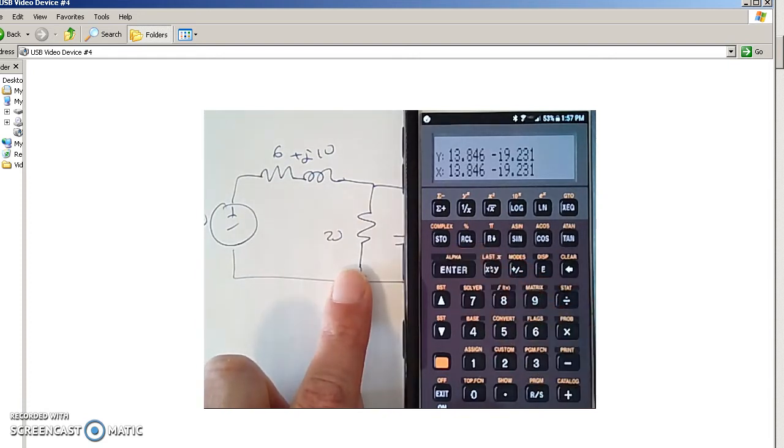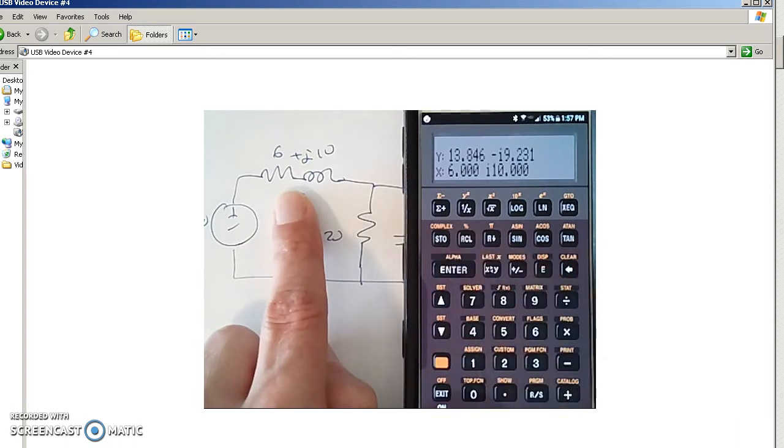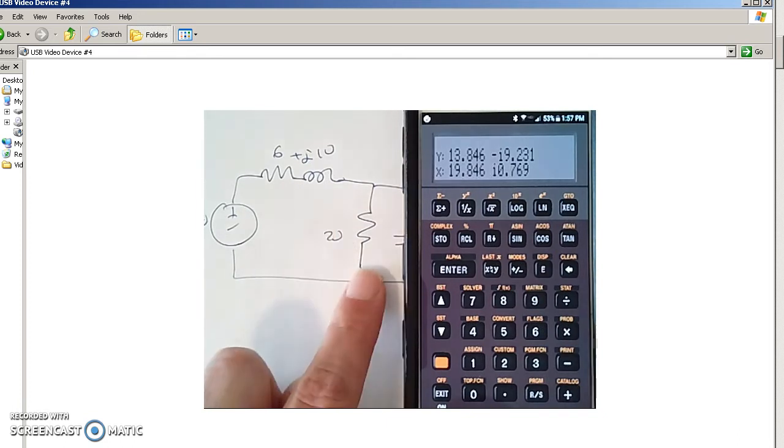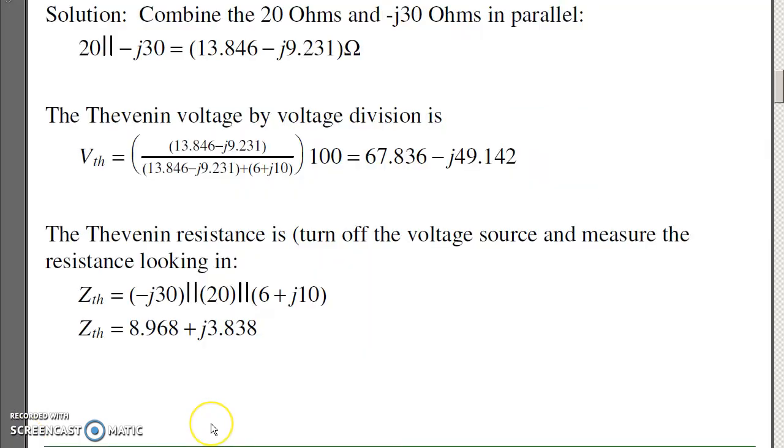Push that on the stack a couple times. Add 6 plus j10. Add those together. That's the denominator. Now take the ratio. Times 100. That's V Thevenin, 67 minus j49. Note that with an HP calculator, these calculations are just as easy as they were at DC. HPs handle complex numbers just like they do with real numbers. Very easy to use.